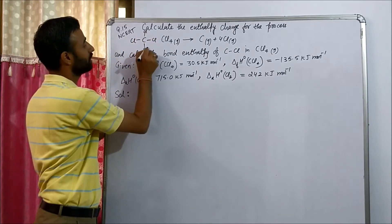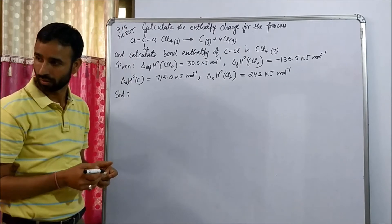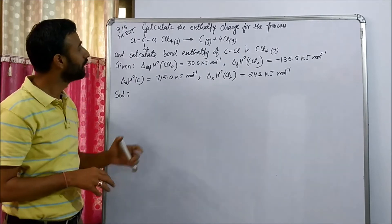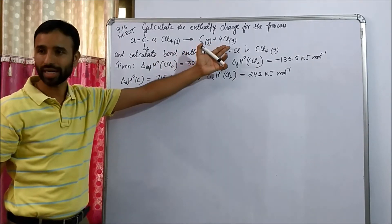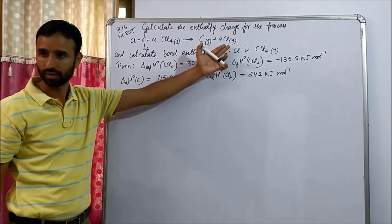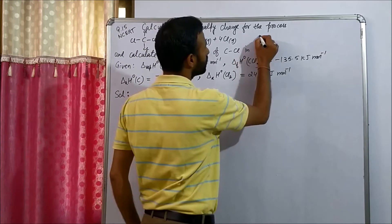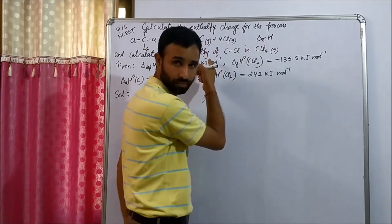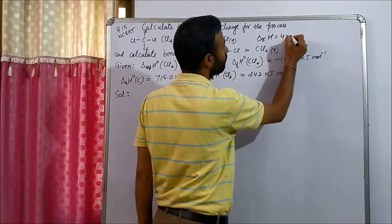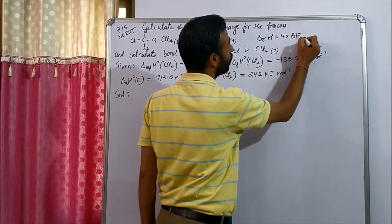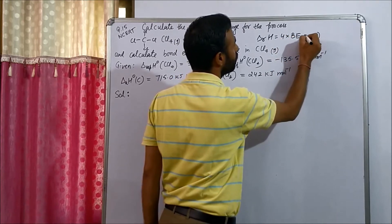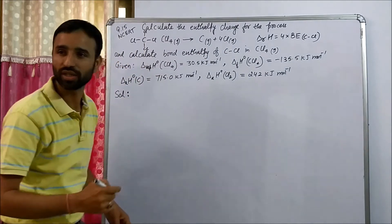How many C-Cl bonds are broken? Four. That means it is four times bond enthalpy. So that implies enthalpy of this reaction is equal to four times bond enthalpy of CCl4 bond. And that is average bond enthalpy actually.